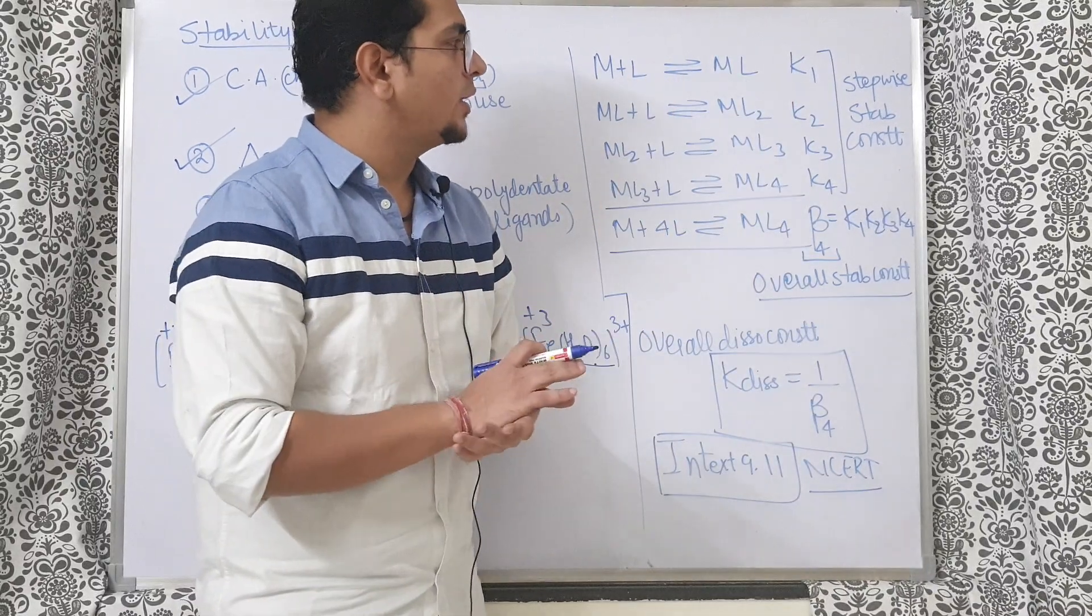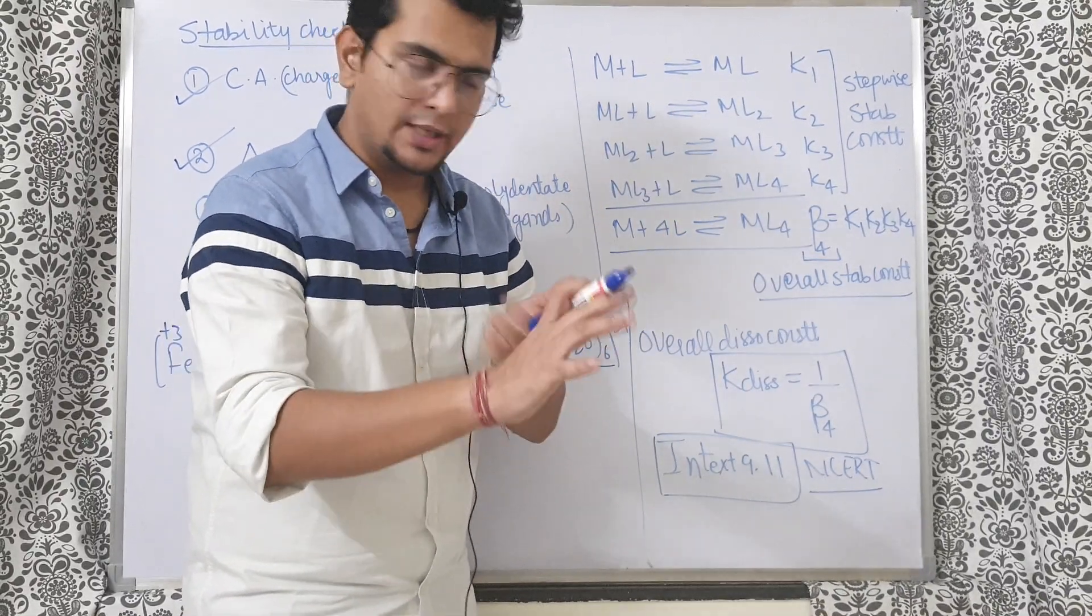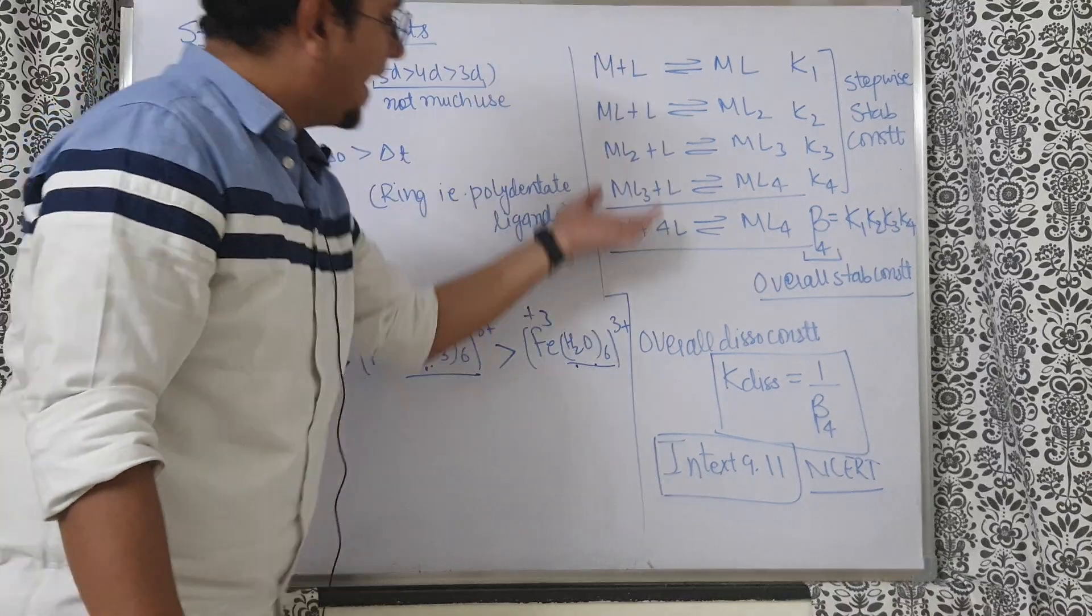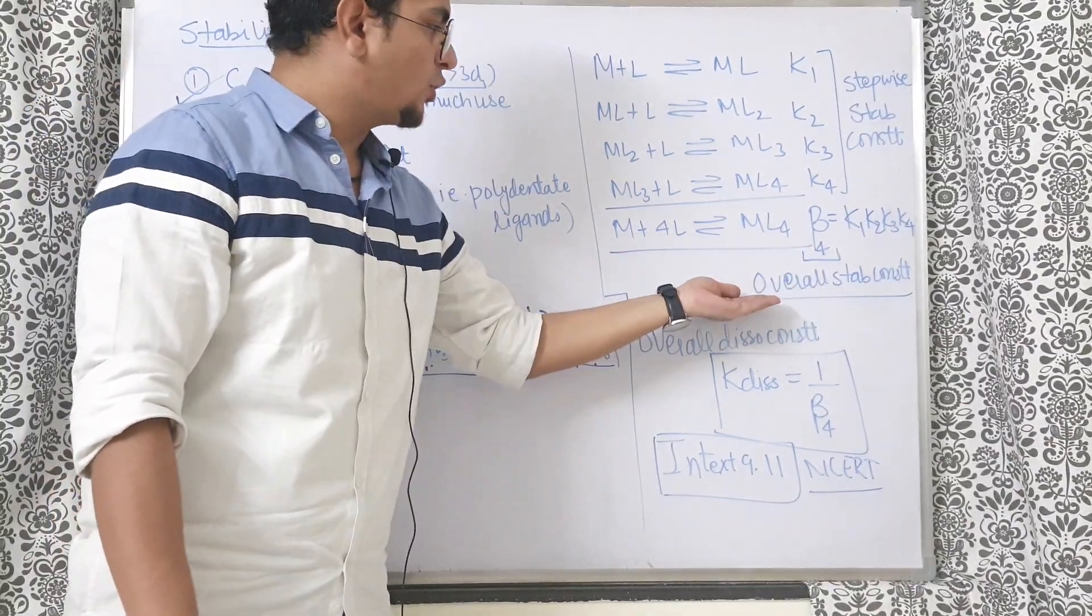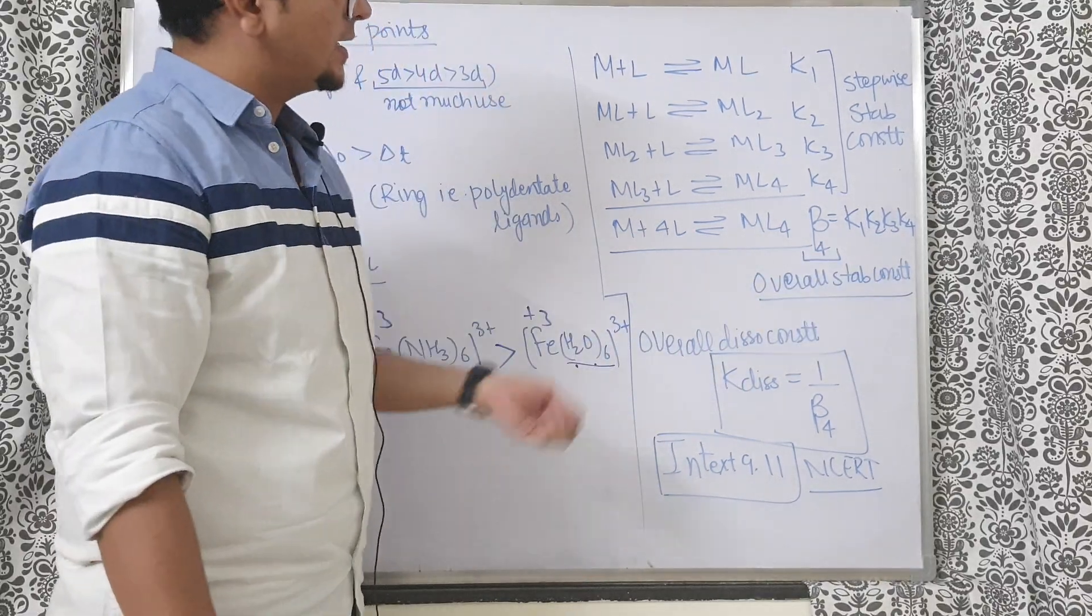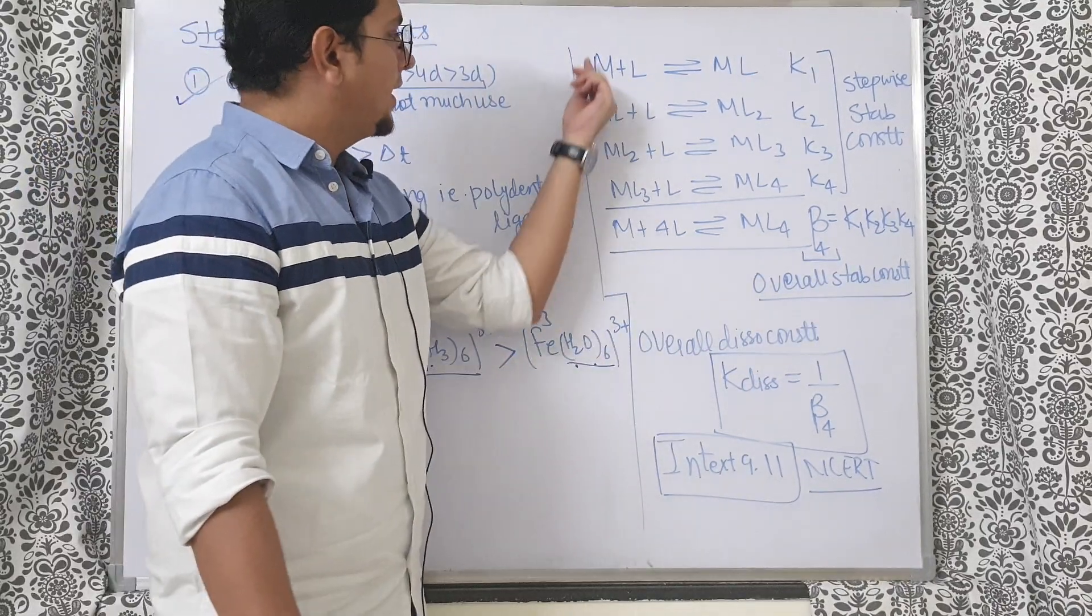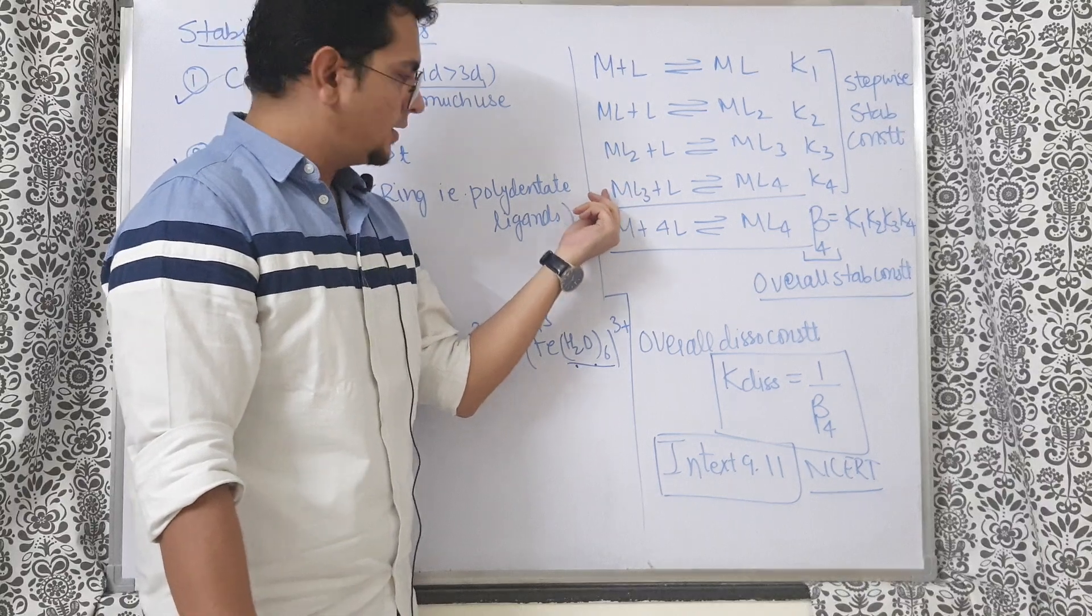If we add all of them, the stability constant we finally get is called overall stability constant. Just like chemical equilibrium, you know when you add the equations to get some equation, in that case the equilibrium constants are multiplied.